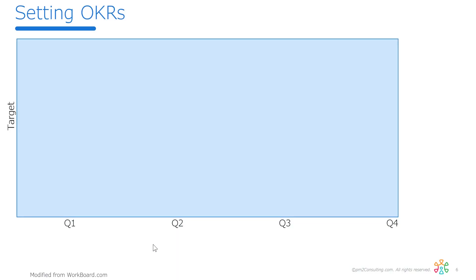So let's talk about SMART. SMART is the traditional way that we manage compensation metrics. In terms of setting those OKRs, I think there are kind of three targets we should talk about. Most probable is what your SMART measures have been historically — what we have put into our budgets and our compensation.